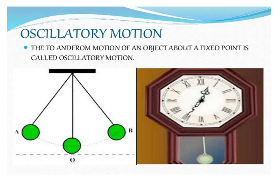Oscillatory motion: the to and fro motion of an object about a fixed point is called oscillatory motion. For example, the motion of the pendulum.